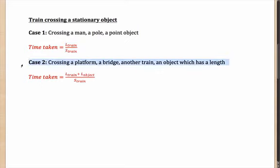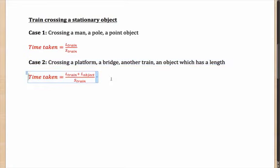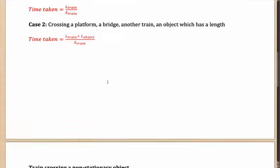However, if the train is crossing a platform, a bridge, another train, or any object which has a certain length, the speed remains the same but what changes is the length that needs to be covered. Now it not only needs to cover its own length but also the length of the object it is crossing. So the time taken will be both lengths added up, divided by the speed of the train.